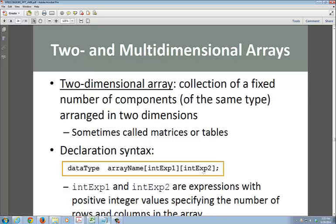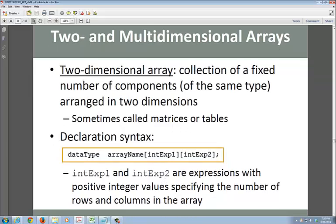If we have time, I will do a problem with you. I also mentioned what a typical two-dimensional or multi-dimensional array is. A two-dimensional array collection is a fixed number of components of the same type arranged in two dimensions. Sometimes called a matrix or a table. This is how you actually declare it: you have a data type and an array name and you can put both of them side-by-side. The first square brackets represent the row, the second one represents the column. Int expression one and int expression two are expressions with positive integers specifying the number of rows and columns.